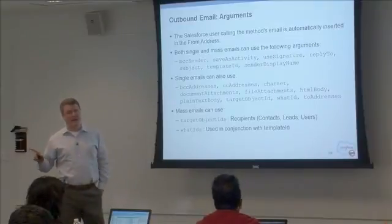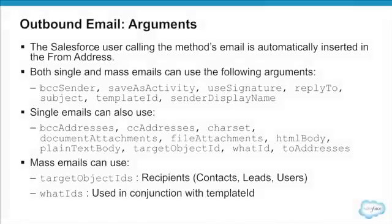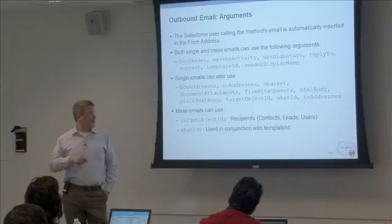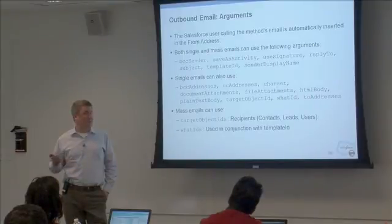The alternative to to addresses is the target object ID. This would be the ID of a contact, a lead, or a user — these are the three standard objects supported, and it does not support custom objects. The reason is that it looks at the email standard field on each of these different objects. When you specify a target object ID equal to a user, that is treated as an internal email and therefore does not count against the daily limit. For example, in the internal Salesforce org, my email address is cberry at salesforce.com.